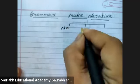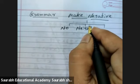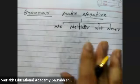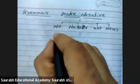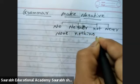Now negative words are: No, Neither, Not, Never — all these words are negative. Right? None, Nothing, Nobody.